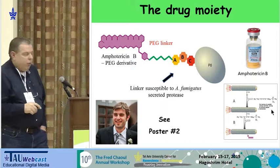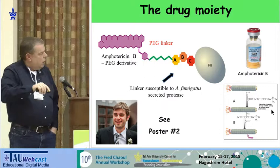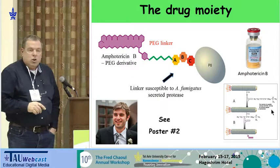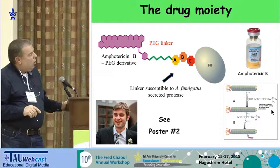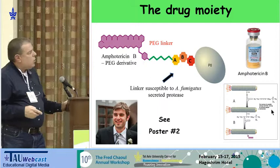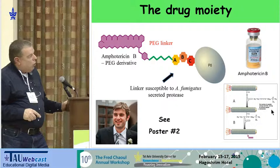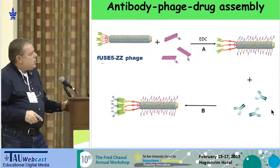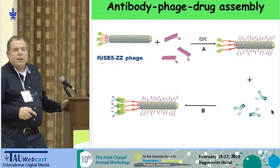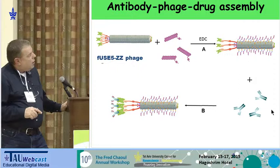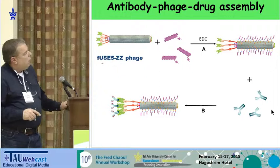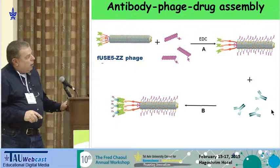In collaboration with Alex Spielman from the Technion, my PhD student Asi Dergachev — who is showing the chemistry details in poster number two — did a series of modifications of the drug: putting a polyethylene glycol linker on one end and another modification to reduce toxicity on the other end. This is the monomer of the coat protein of the virus, to which we chemically connect the drug. It is connected by a cleavable linker.